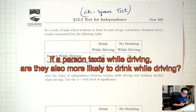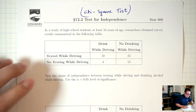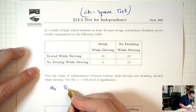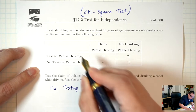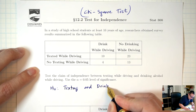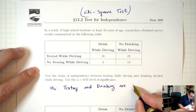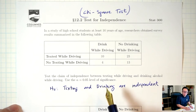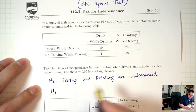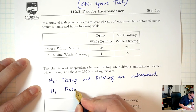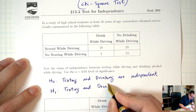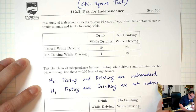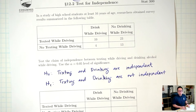Let's start off with what the correct H0 and H1 for a test of independence should be. H0 is going to say that texting and drinking are independent — in other words, they have nothing to do with each other. H1 is going to say that texting and drinking are dependent, meaning they do have something to do with each other.